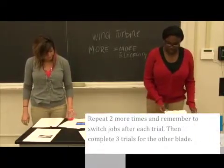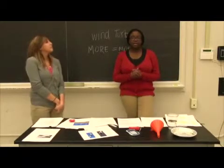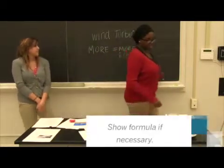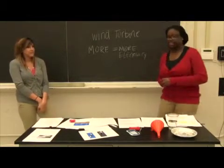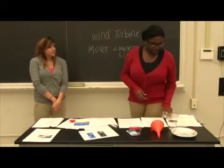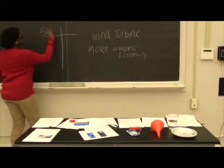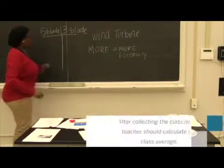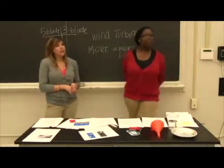Now that we've gotten all our results and you've put in the number of spins, what are we going to do with all of this class data? How do we represent several numbers as one number? An average. How do we take the average? Add the numbers together and divide by the number of numbers. So we had a five-blade and a three-blade, and we're going to collect all of our class's data to get a class average. What did the data show? The three-blade was faster — it had a higher average.